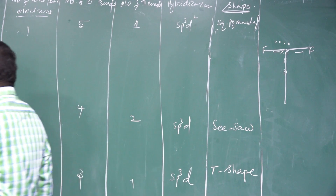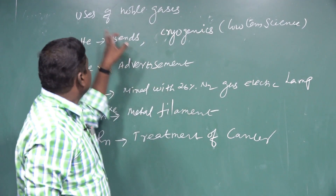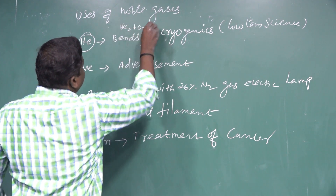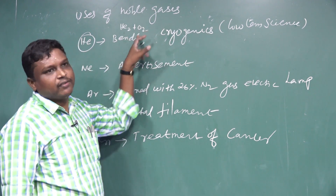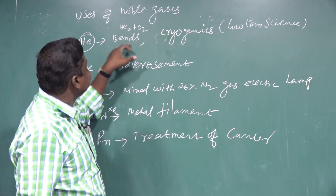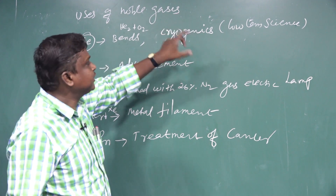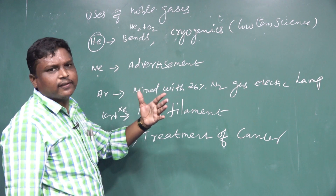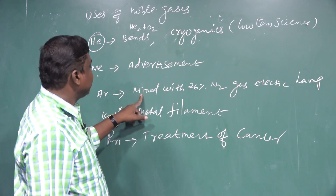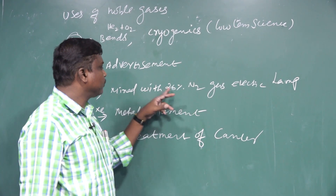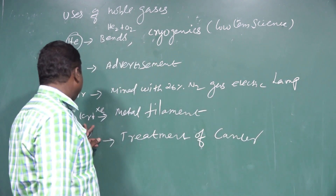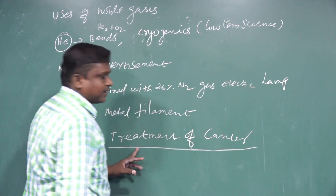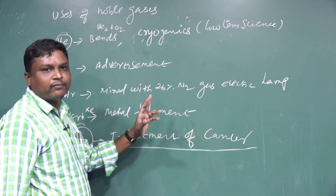Uses of noble gases: Helium — helium-oxygen mixture is used in deep sea diving to prevent bends disease. Helium is also used as a cryogenic agent for low temperature applications. Neon is used for advertisement purposes in fluorescent lights. Argon gas is mixed with nitrogen in electric lamps. Krypton and xenon are used in metal flashbulbs. Radon is used in the treatment of cancer as a radioactive element.